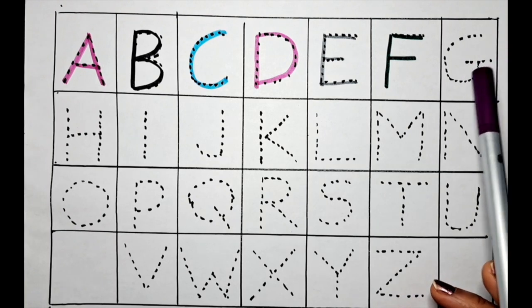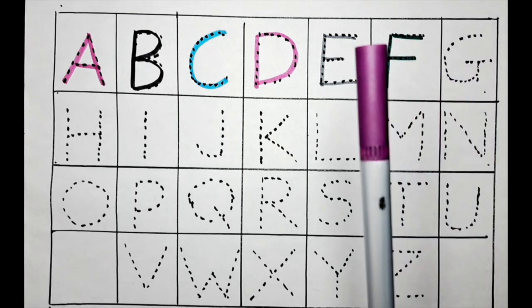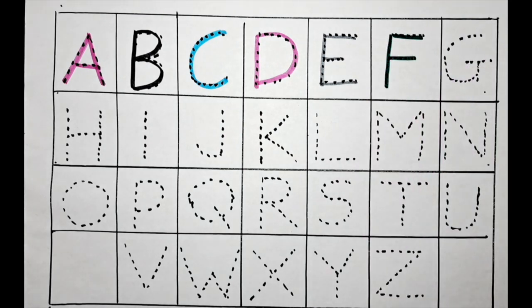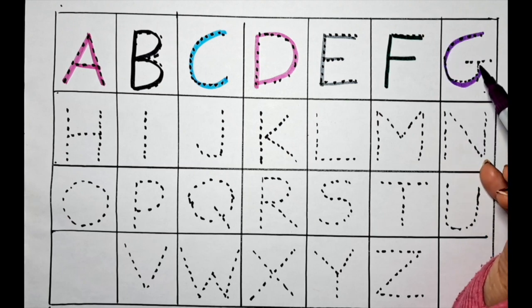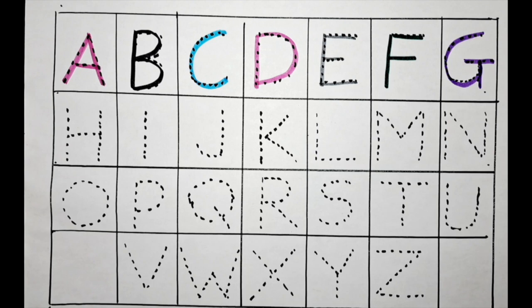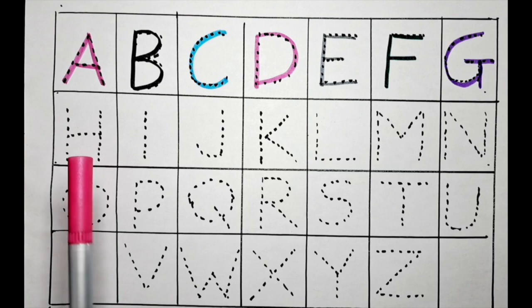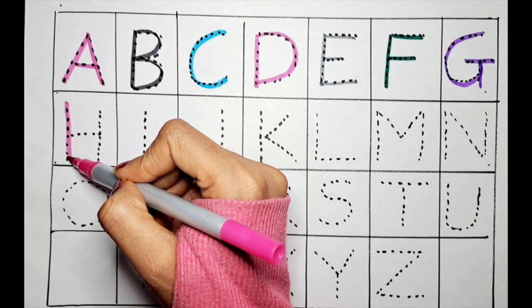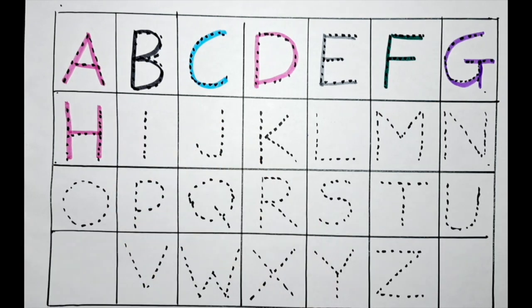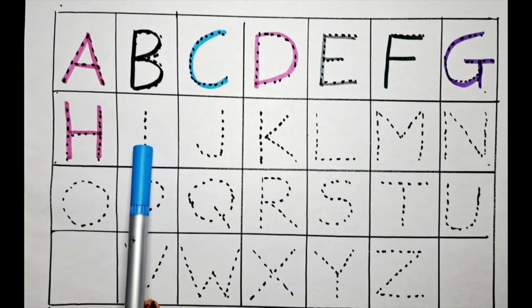This one is G. Let's practice this G with the purple. G for gorilla. This is H. Let's do it with the pink color. H for house.